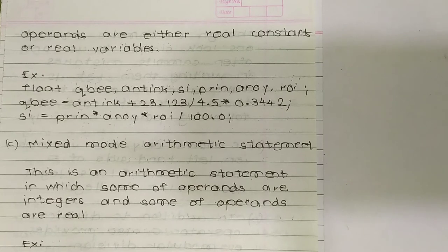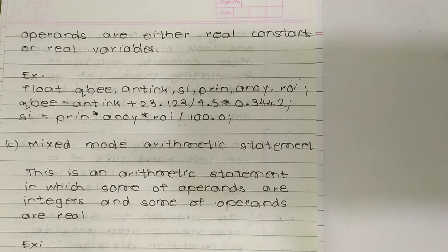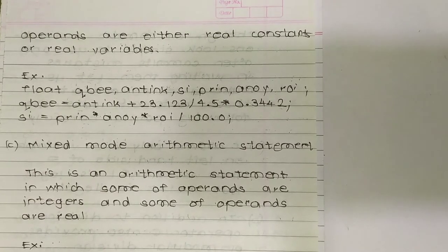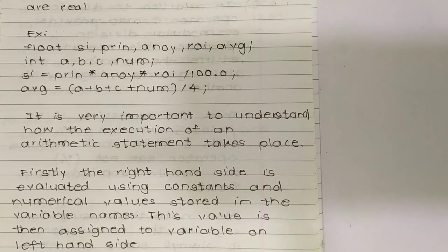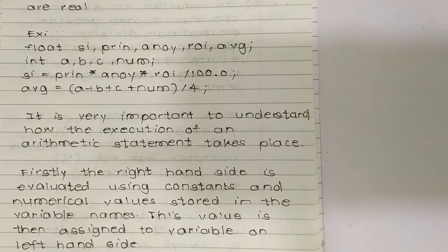The third type is the mixed mode arithmetic statement. This is an arithmetic statement in which some operands are integers and some operands are real. So it has a mix of types. For example: float si; int a, b, c, num; and avg = a + b + c + num / 100.0.